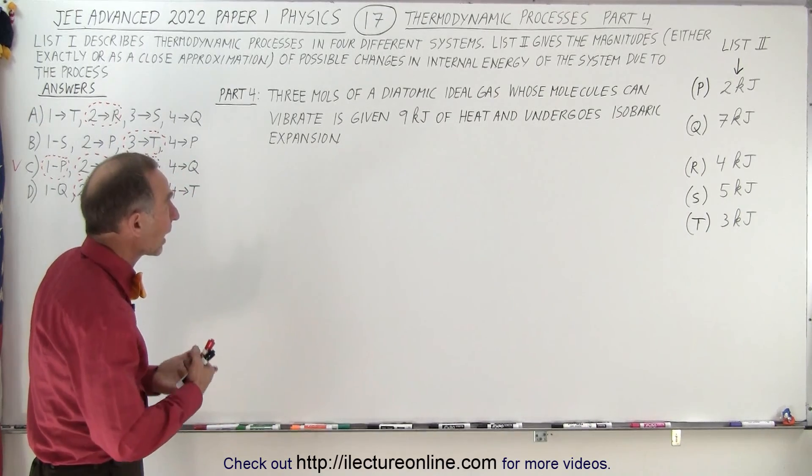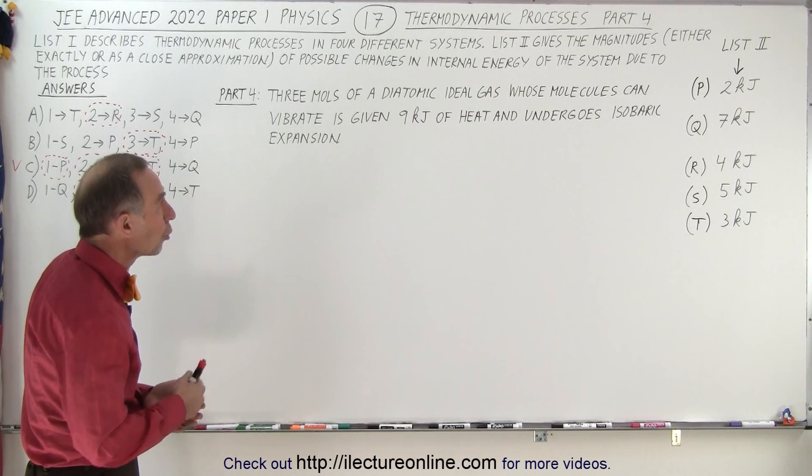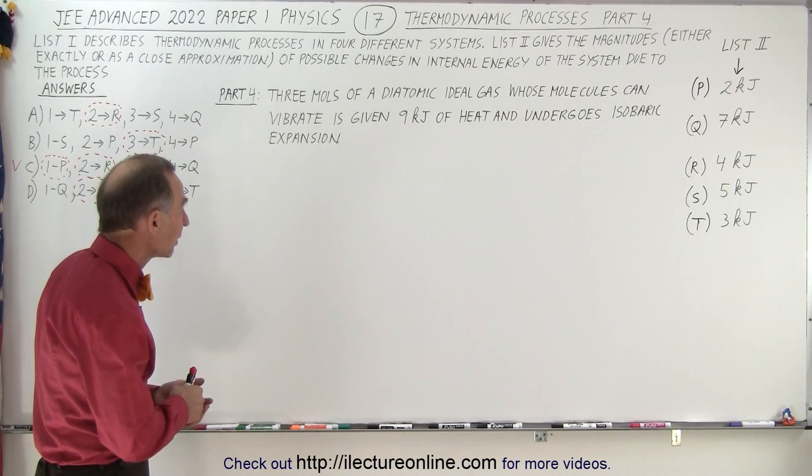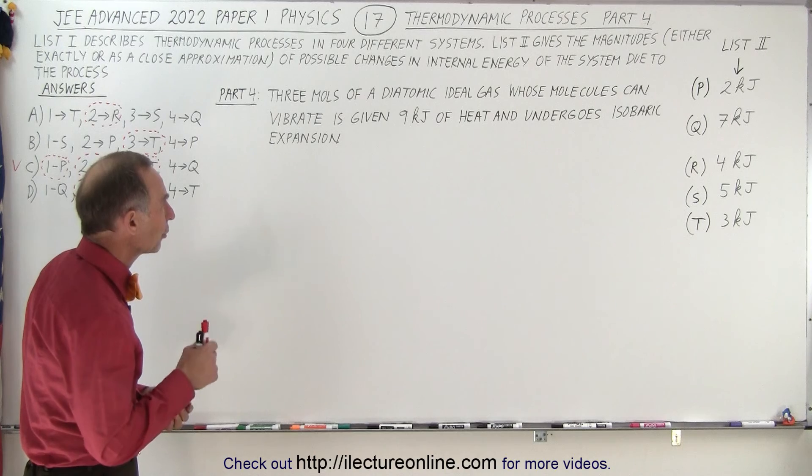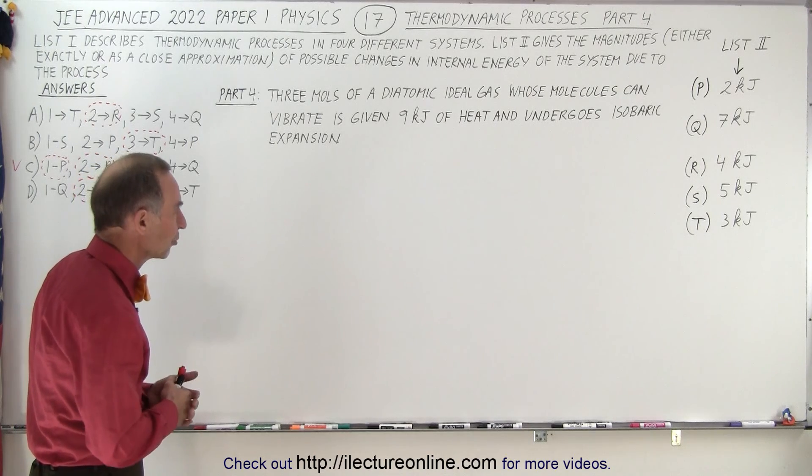It says three moles of a diatomic ideal gas whose molecules can vibrate is given nine kilojoules of heat and undergoes isobaric expansion.